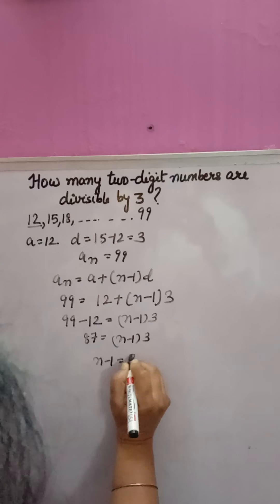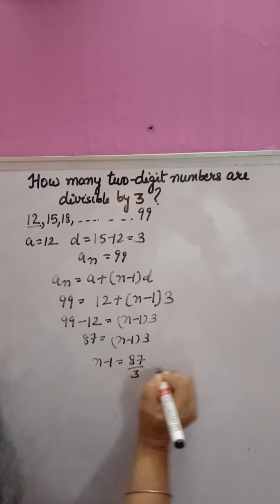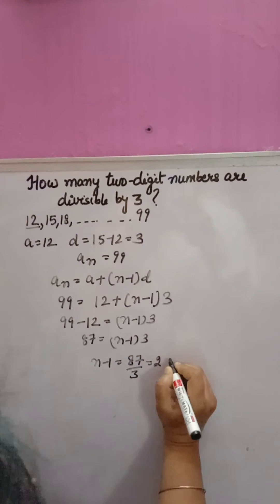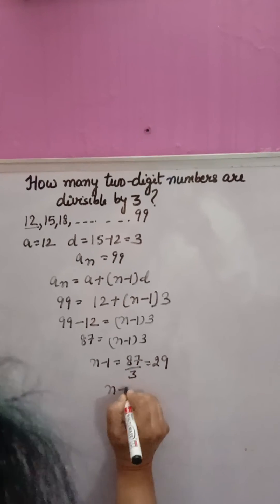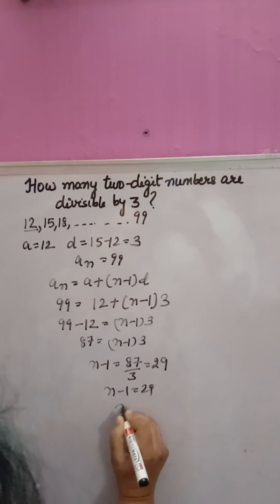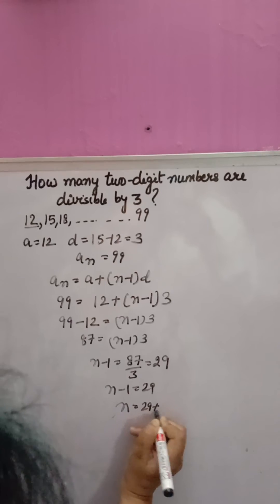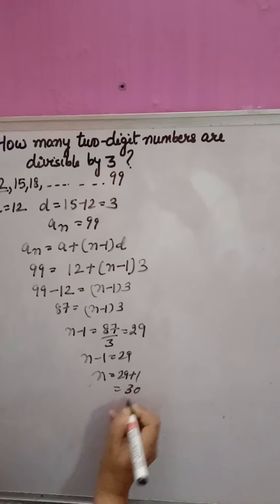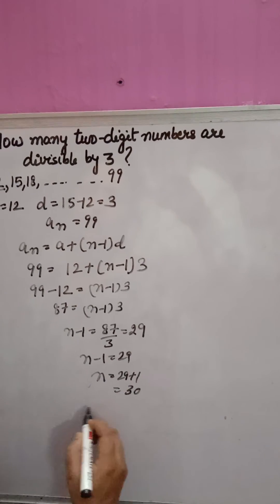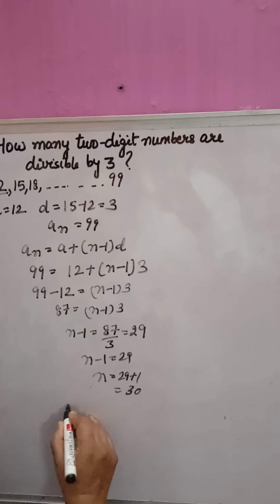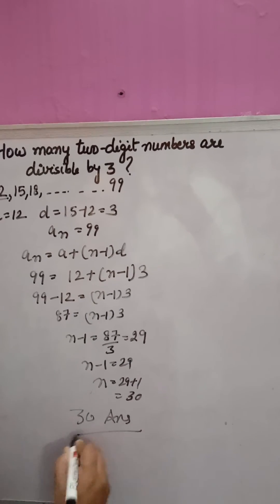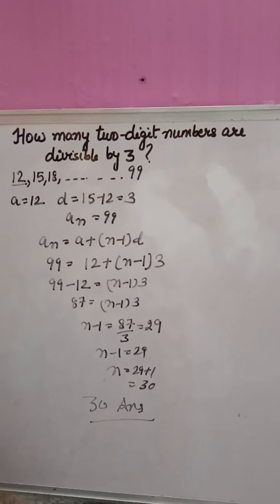So n minus 1 will equal 87 over 3. 87 divided by 3 equals 29, so n minus 1 equals 29. Therefore n equals 29 plus 1, which is 30. So how many two-digit numbers are divisible by 3? The answer is 30 two-digit numbers are divisible by 3. Thank you.